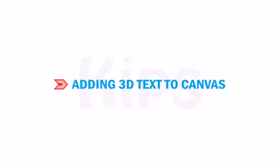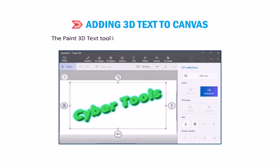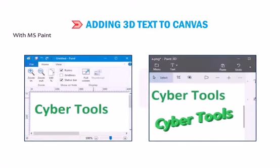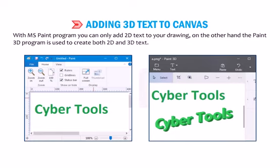Students, let us find out how to add 3D text to canvas. You can also enhance your artwork by adding 3D text to your canvas. The Paint 3D text tool is an upgrade of the text tool used in MS Paint. With MS Paint, you can only add 2D text to your drawing. On the other hand, the Paint 3D program is used to create both 2D and 3D text.